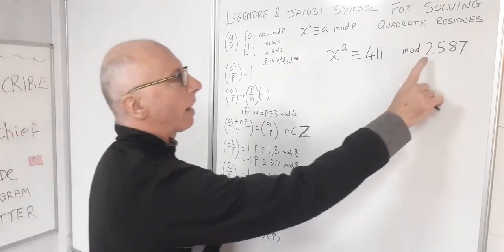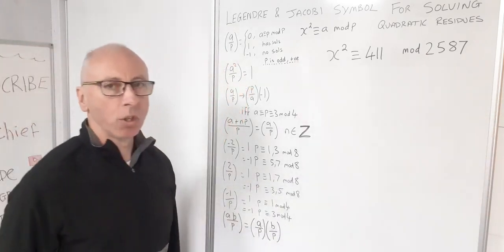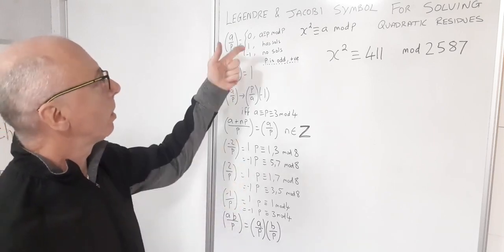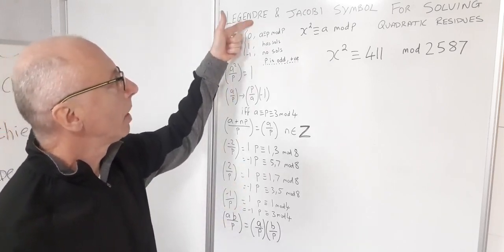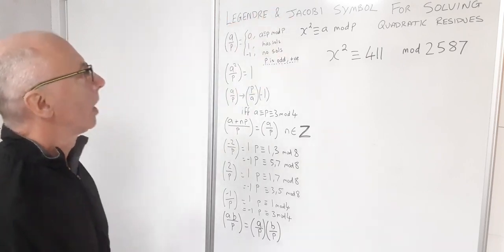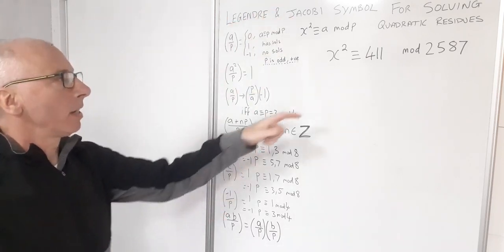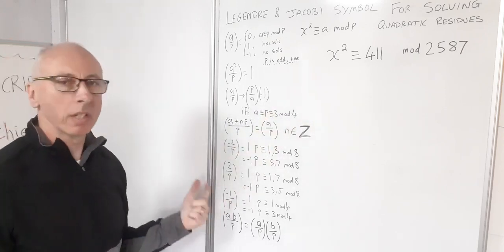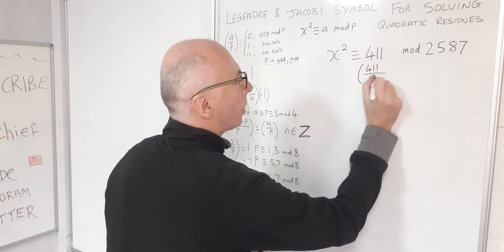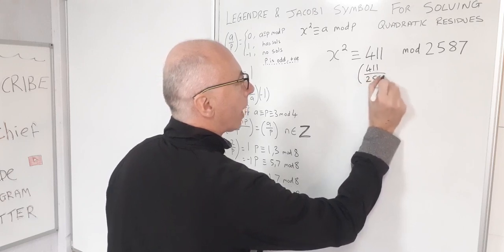Now this is a really big number. I'm not really sure if it's prime or not, so I'm going to go into Jacobi notation because the difference is Legendre is for prime and Jacobi is if it's not prime. So manipulating the numbers using these rules is the way we're going to go. So I'm going to write this as 411 over 2587.